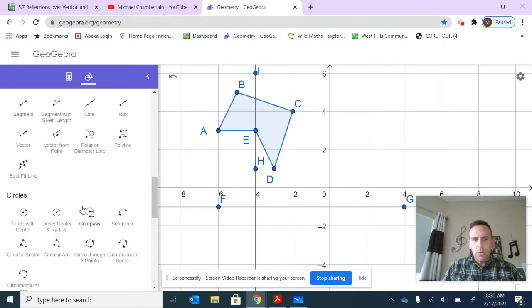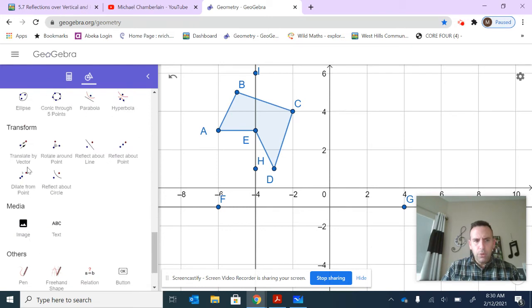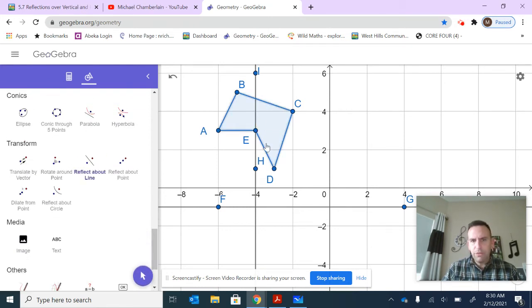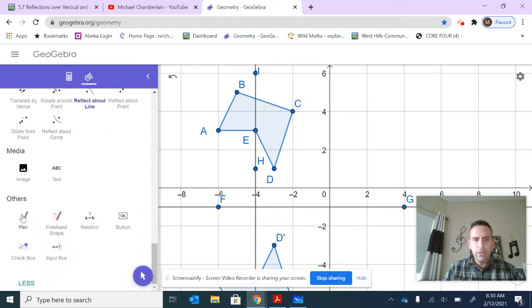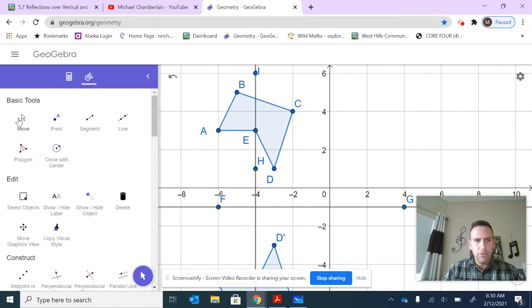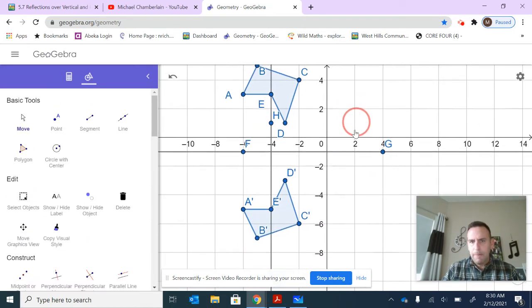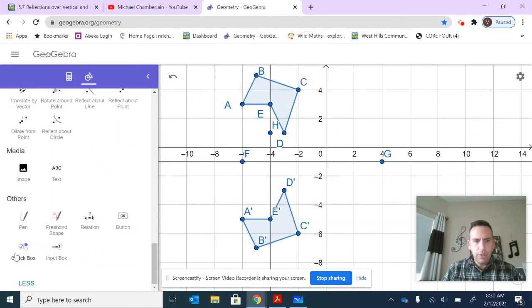To do that, we choose the tools at the bottom: transform, reflect this figure about this line. And then we're just going to try and notice some things. What are some things that happened when we did this? First of all, let me zoom out a little bit so you can see it. So what happened to those coordinates?